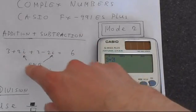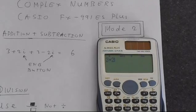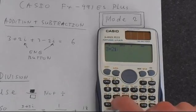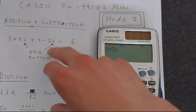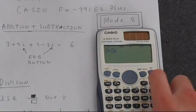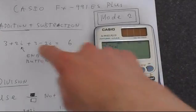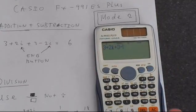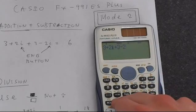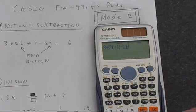To access the i, that's on top of the eng button. Find eng, which is here, and then put in plus 3 minus 2, and then i equals, and that's 6.